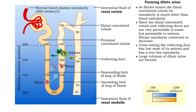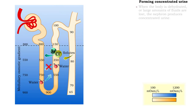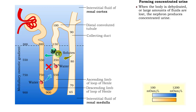In this way, large volumes of dilute urine are formed. When the body is dehydrated, or large amounts of fluids are lost, the nephron produces concentrated urine.